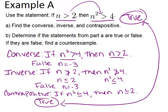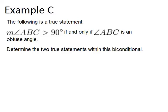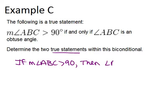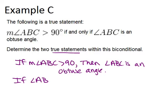Now we go to example C, which says the following is a true statement: the measure of angle ABC is greater than 90 degrees if and only if angle ABC is an obtuse angle. Determine the two true statements within this biconditional. A biconditional is when an original statement and its converse are both true, so we need to pull out those two conditionals. The first: if the measure of angle ABC is greater than 90 degrees, then angle ABC is an obtuse angle. The converse: if angle ABC is an obtuse angle, then the measure of angle ABC is greater than 90 degrees.